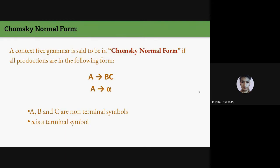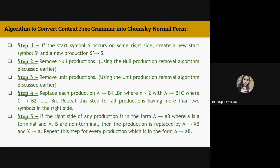Now, Chomsky Normal Form. CNF stands for Chomsky Normal Form. A CFG is in CNF if all production rules satisfy one of the following conditions: the start symbol generating epsilon (S → ε), a non-terminal generating two non-terminals (e.g., A → BC or D → EF), or a non-terminal generating a single terminal (e.g., A → a). Here A, B, C, D are non-terminal symbols and a is a terminal.